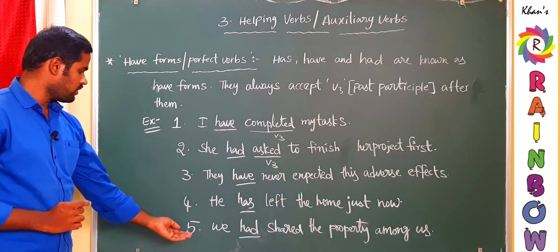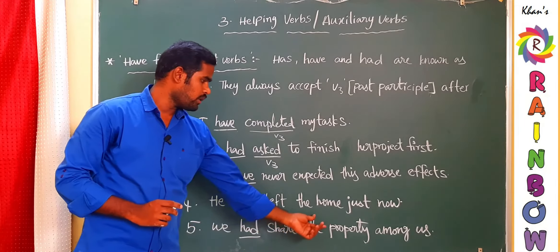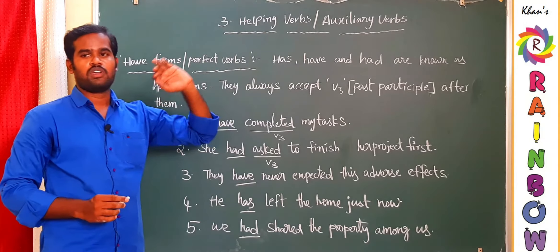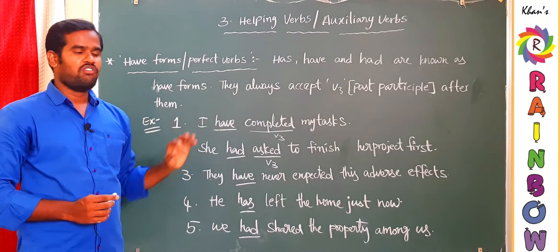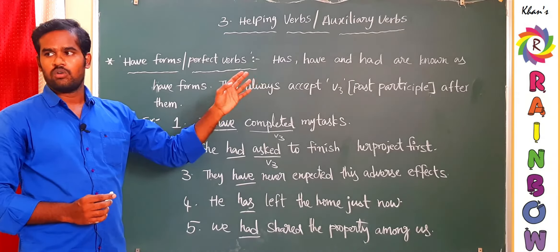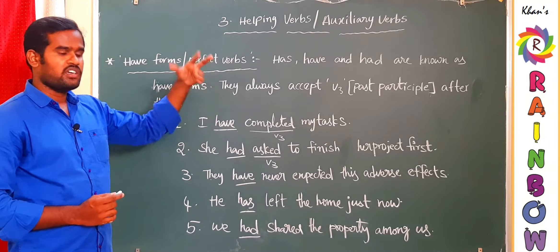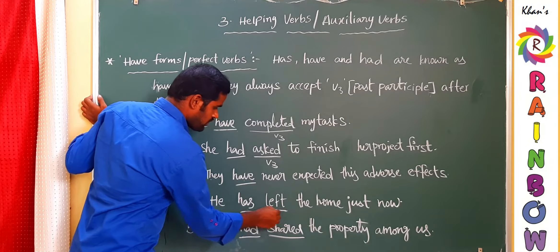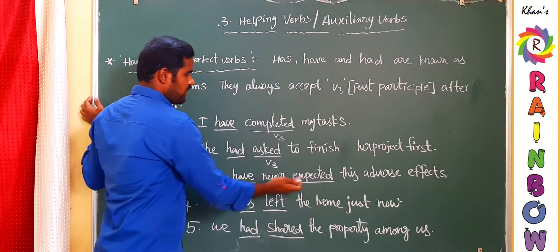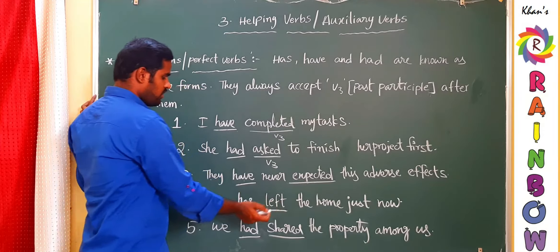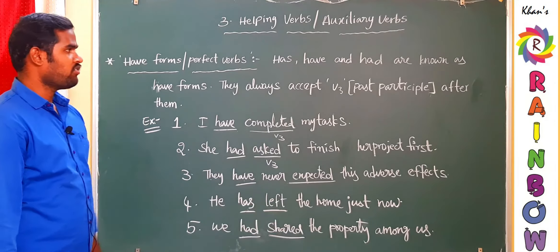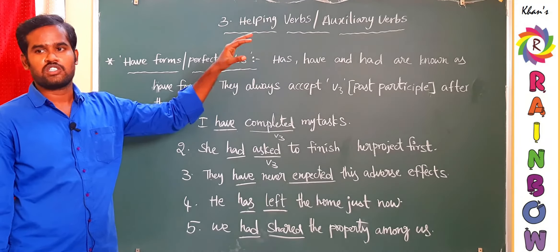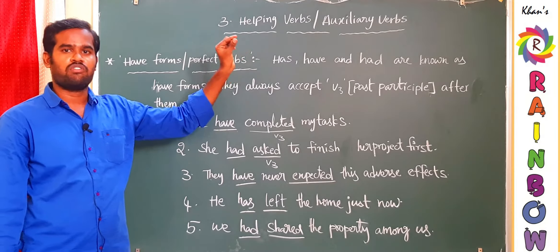Fifth example: 'We had shared the property among us.' For past tense 'had,' there is no singular/plural issue — both singular and plural subjects use 'had.' In present tense it is different. To conclude: Have-forms are has, have, and had. 'Have' accepts V3, 'has' accepts V3, and 'had' accepts V3. Have-forms always accept V3, the past participle, after them.